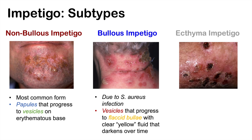The third subtype is Ecthyma Impetigo. Ecthyma Impetigo is a bit different in that it presents as an ulcerative, punched-out lesion with crusting around the lesion. It looks like holes have been punched out in the skin.